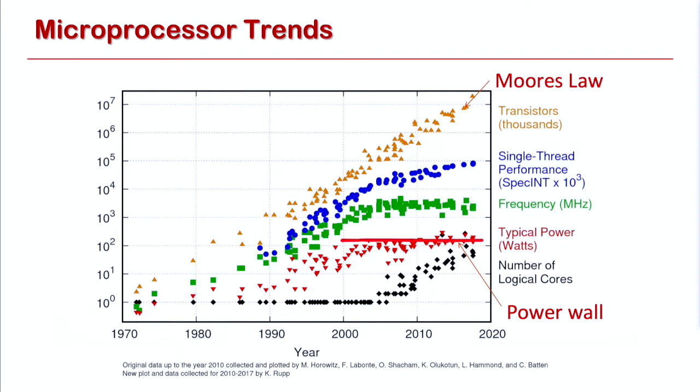This graph shows Moore's Law with transistor count and the improvement of microprocessor trends over the last 30 years. Around the early 2000s, we ran into the power wall — we fundamentally couldn't dissipate more than a couple hundred watts in an air-cooled environment without burning up the chip. The world turned to multicore. We did the multicore research in the mid-90s, and it took roughly 10 years for this to become an industry standard. Now even multicore approaches are running out of steam because Dennard Scaling is over.